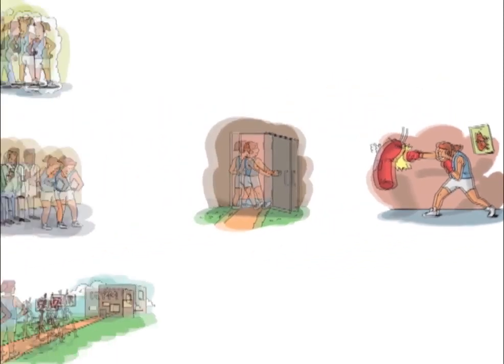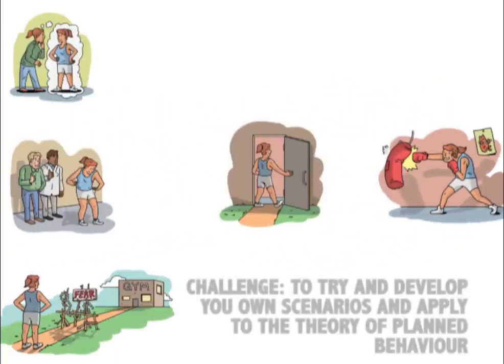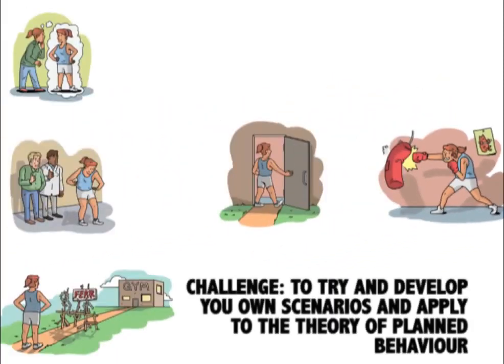Try and develop your own scenarios and then apply the theory of planned behaviour to them. Create a fictional character, and try to develop a story that would distinguish between a person who is likely to develop weak, moderate, and strong intentions to engage in an exercise class.